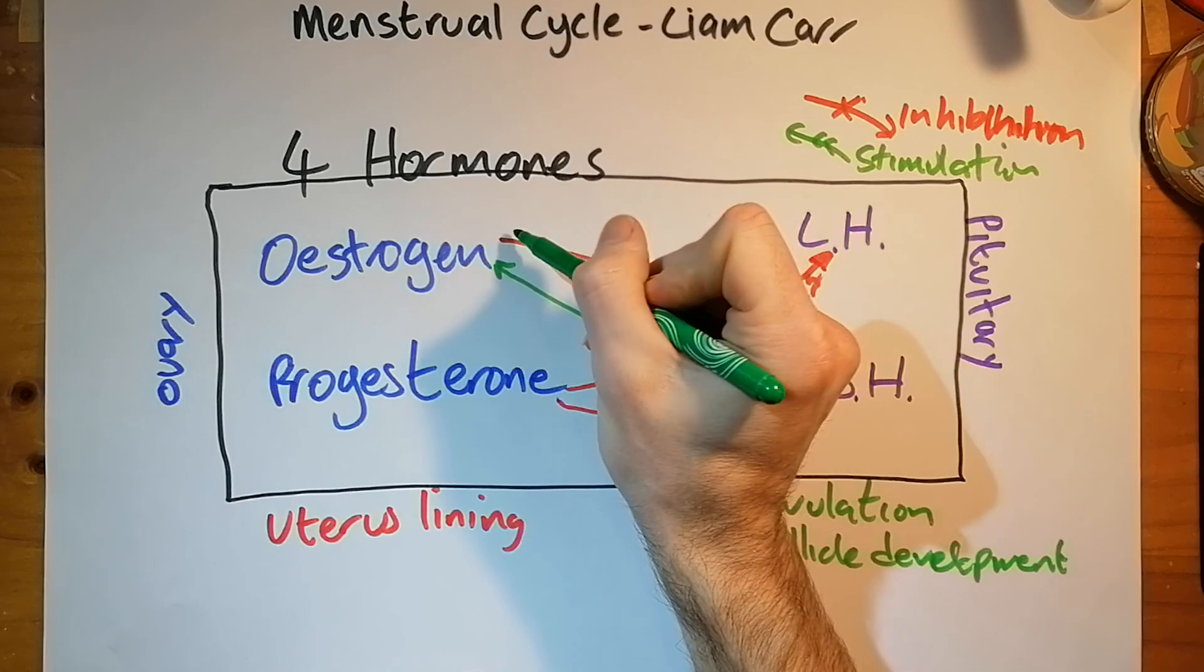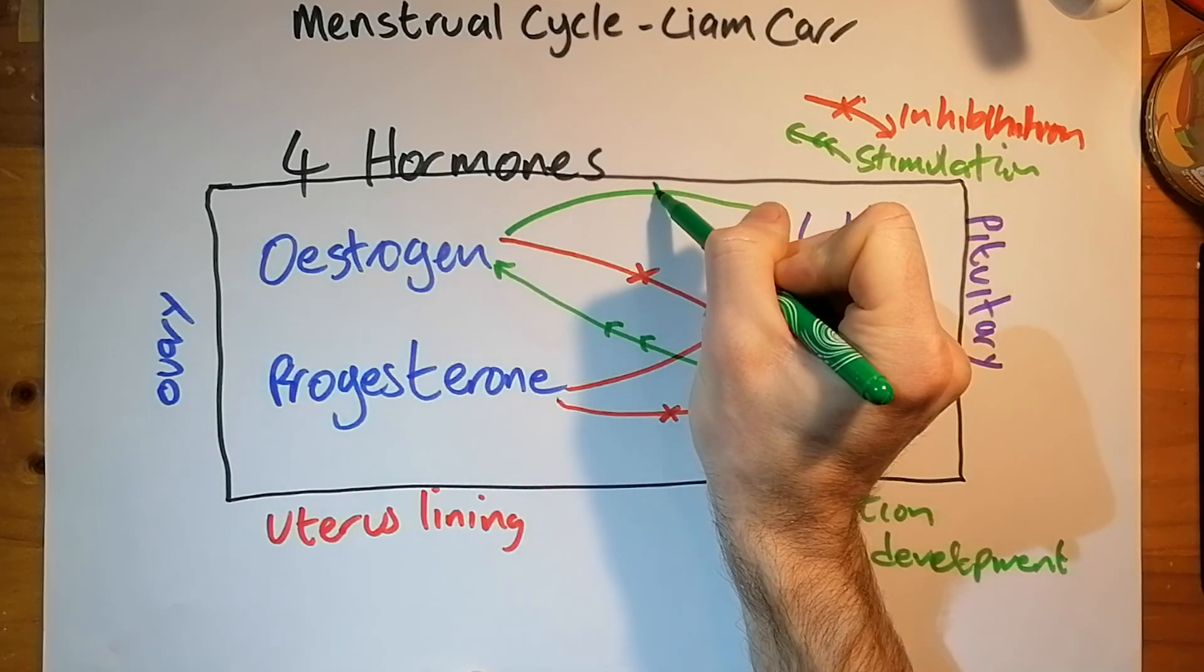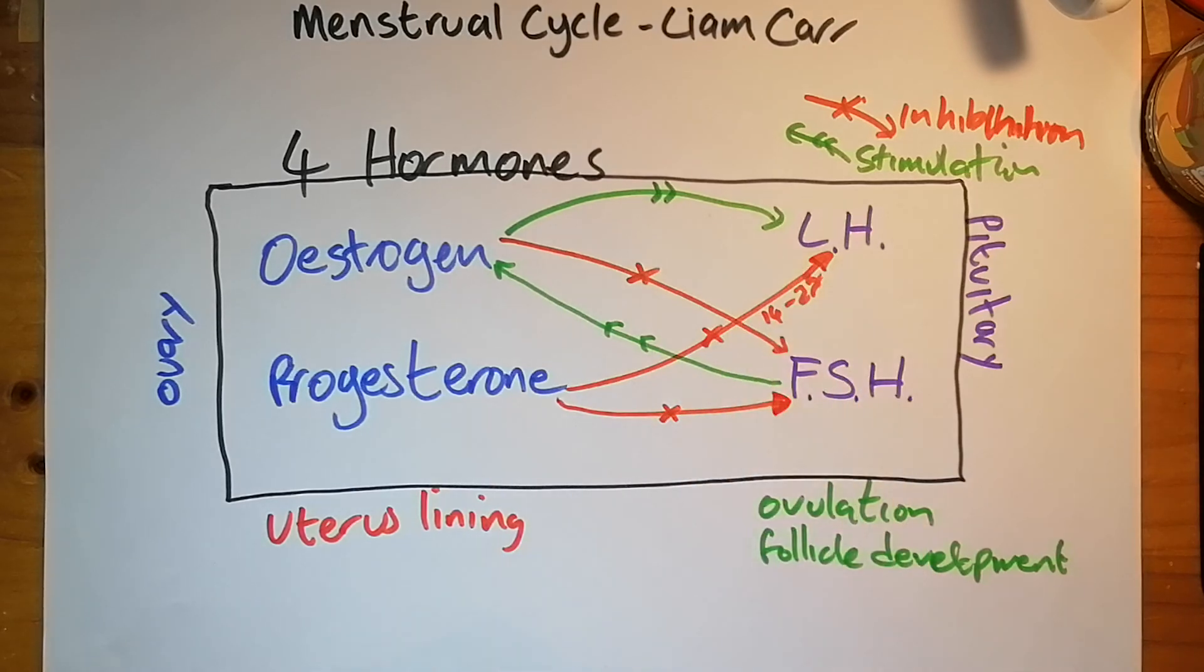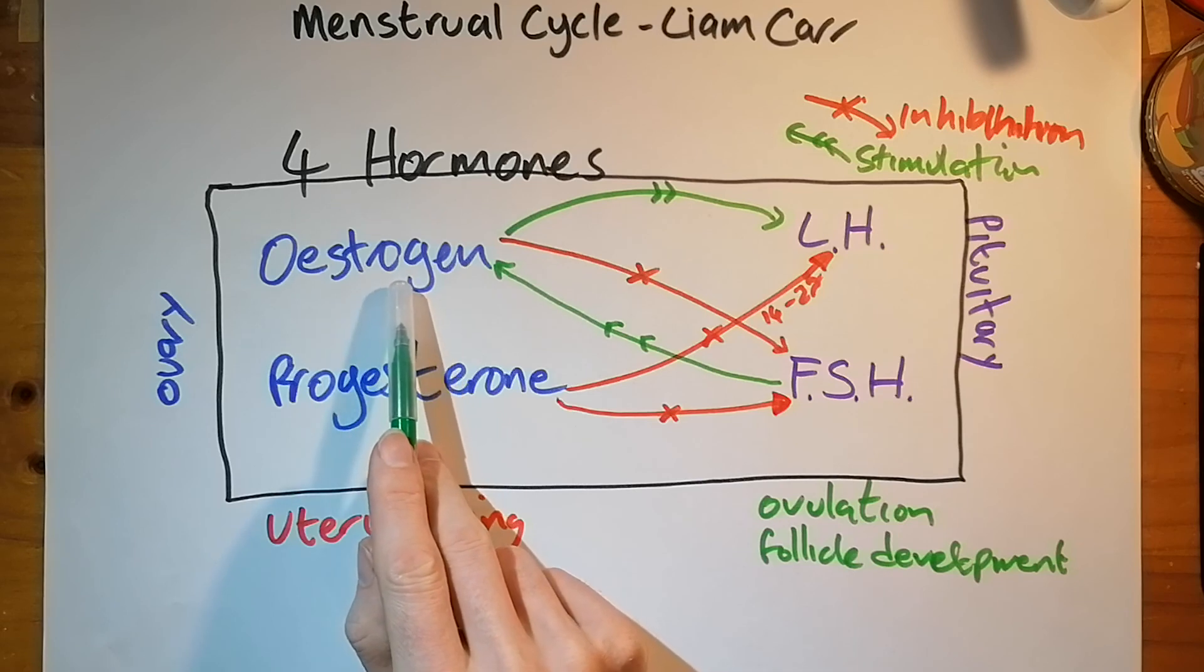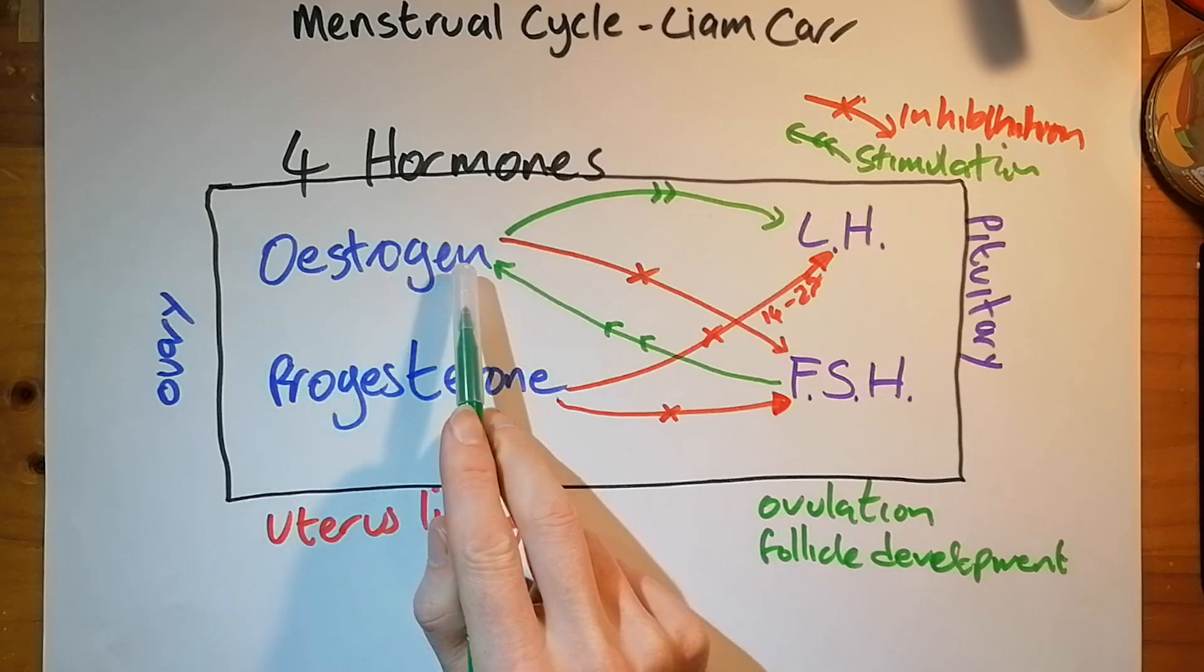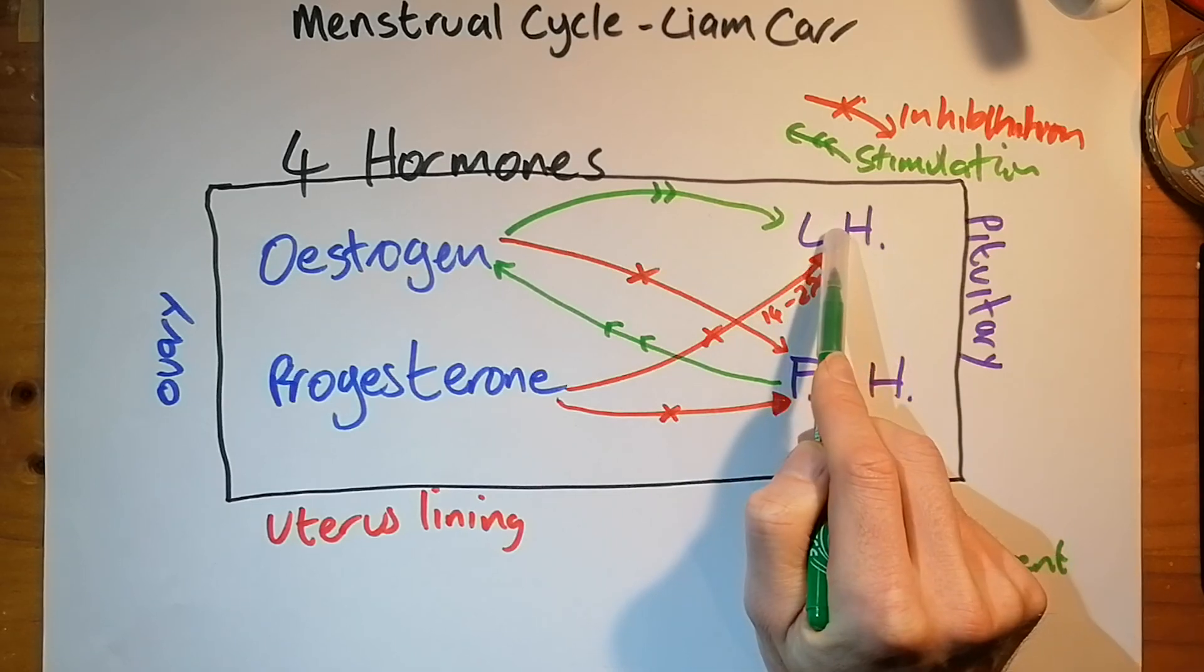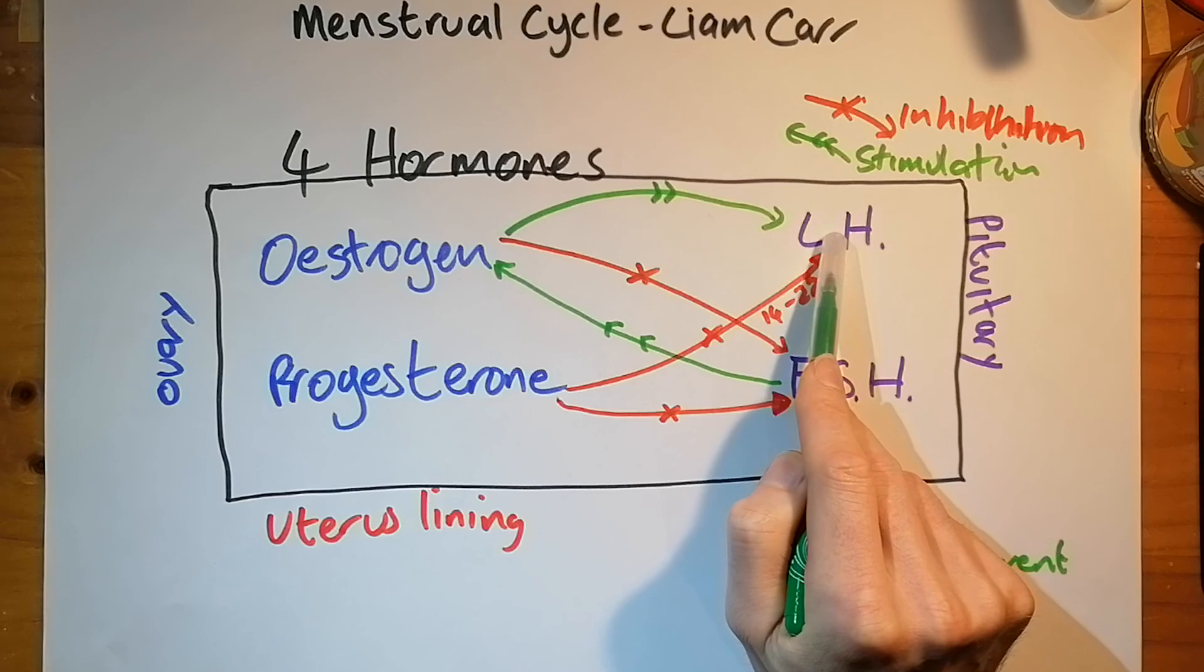And other things that are going on. Estrogen also, it stimulates the release of luteinizing hormone. And it sort of makes sense. Because if you've got, if the estrogen is high. If you scroll back in the video and have a look at your graph again. If you've drawn the graph and have a look at it now. Estrogen peak comes before the LH peak. So it would follow that estrogen stimulates LH release.